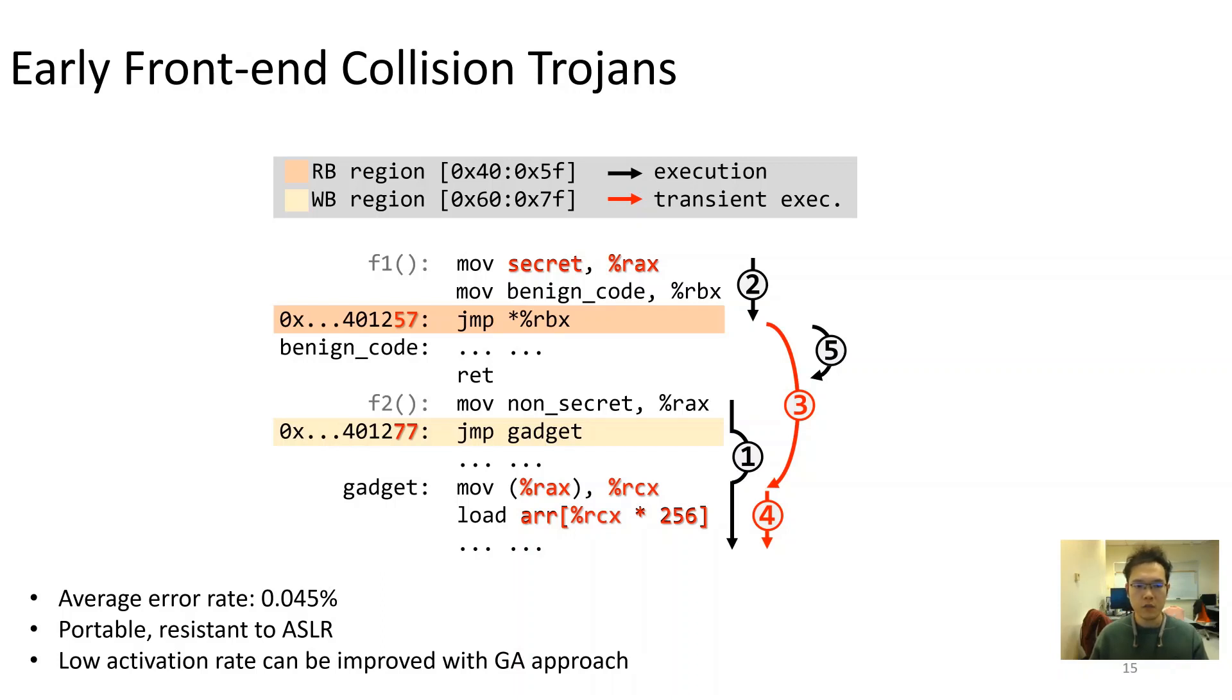Although we observe low activation rate with the original trojan prototype, we managed to improve it with genetic programming approach, which we'll be introducing in the next slides.